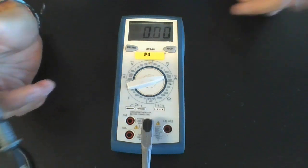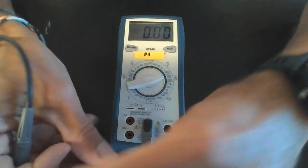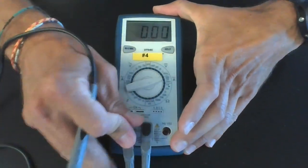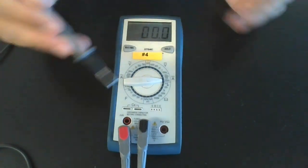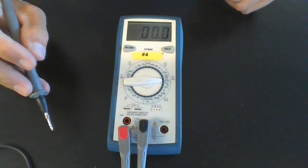A common mistake students do in this course is that, for example, this is going to be set at the 10 amps scale, and then you're trying to read something like milliamps, and the measurement you get, the scale is incorrect.